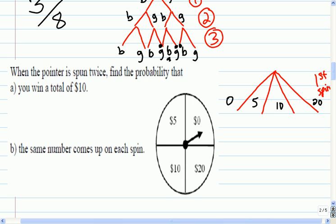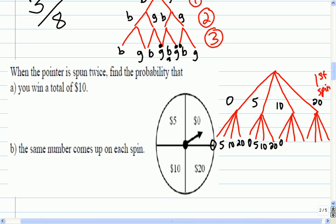Now, when I spin it the second time, I have the same four possible outcomes. So what are those outcomes? Well, again, they're $0, $5, $10, $20. $0, $5, $10, $20. $0, $5, $10, $20. $0, $5, $10, $20. $0, $5, $10, and $20.